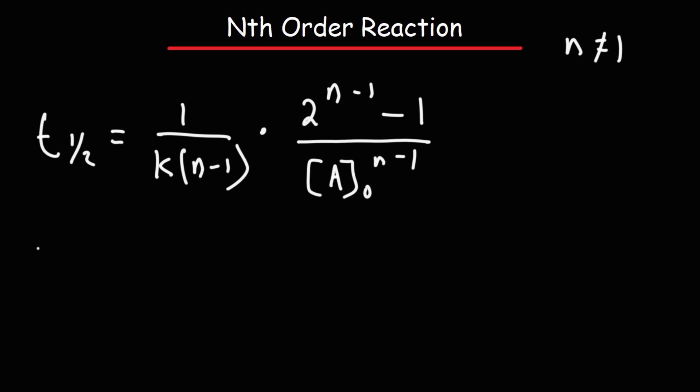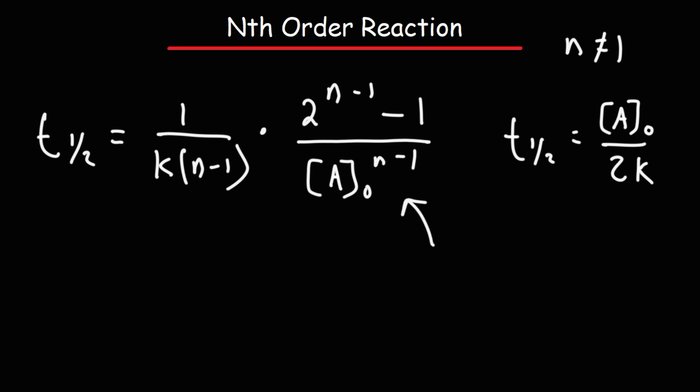So let's get the half-life equation when n is 0. In that integrated rate law video, here's the formula I wrote down — it's a_initial over 2k. We're going to try to get this formula using the nth order formula. For those of you who want a printout of all these formulas, feel free to check out the formula sheet in the description section below.